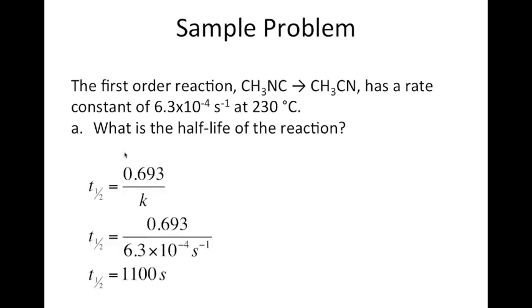For part A, since this is a first-order reaction, we use T one-half equals 0.693 divided by K. We're given the rate constant, so this is straightforward. Dividing 0.693 by 6.3 × 10⁻⁴ s⁻¹ — noting the units are seconds to the minus one, so our answer will be in seconds — gives us 1,100 seconds. That is how long it takes for the concentration to be reduced by half.